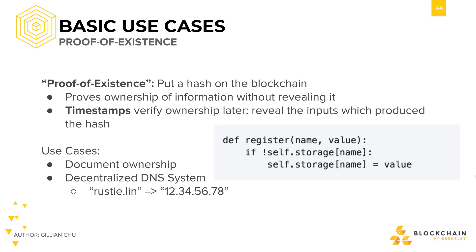Let's say we came up with an amazing new tech buzzword: 3D printing artificial intelligence on the blockchain. We wanted to prove that we came up with it before some date, but we don't yet want to reveal the buzzword to the public. How do we do this in a way that everyone trusts?